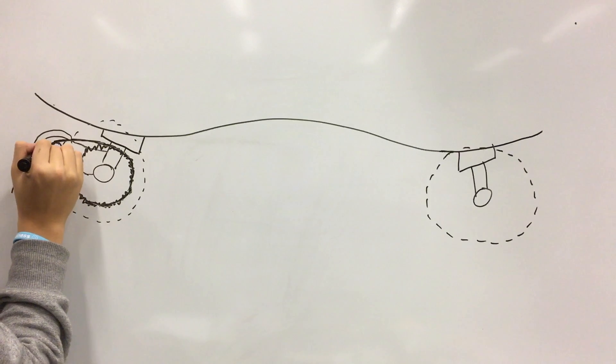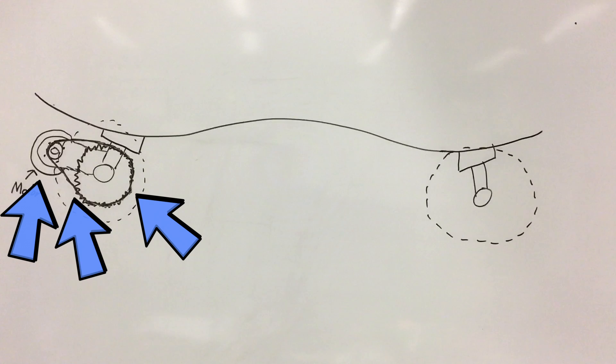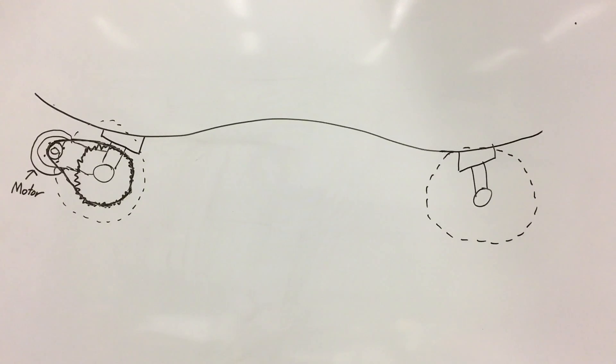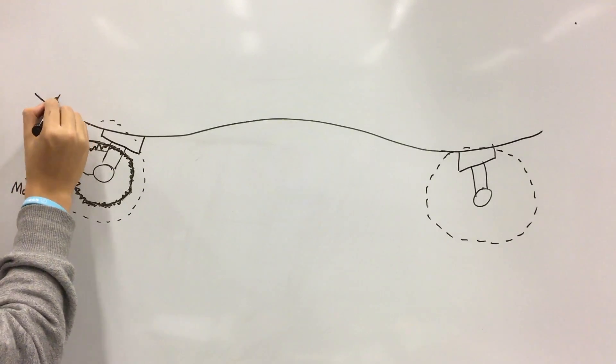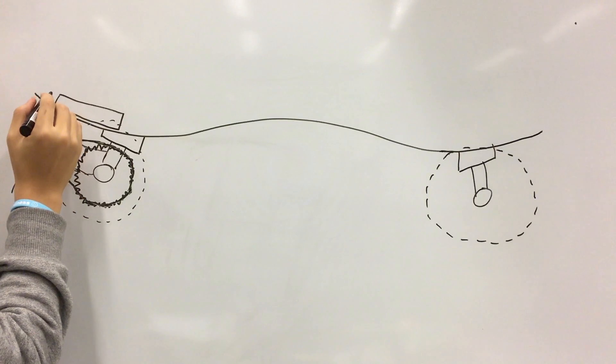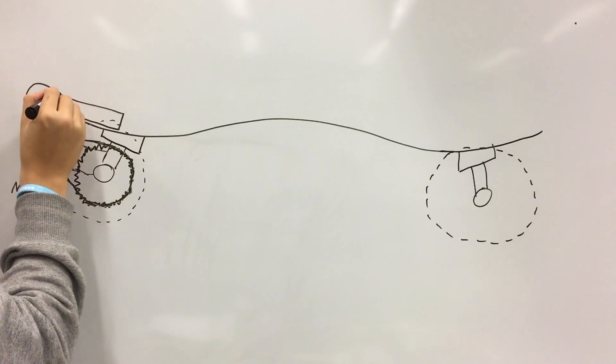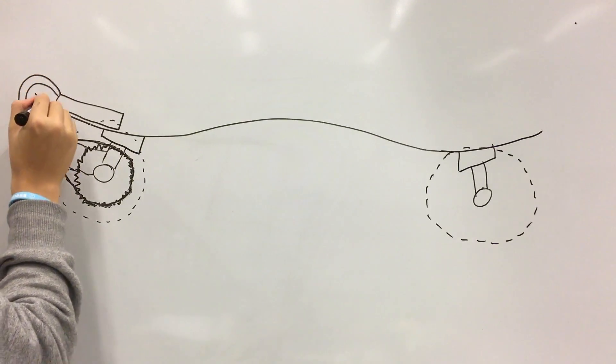I'm currently drawing the connections of the motor, the gearing, the belt. And then now I'm drawing the VESC, so that's the variable electronic speed control.